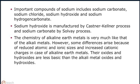The chemistry of alkaline earth metals is very much like that of the alkali metals. However, some differences arise because of reduced atomic and ionic sizes and increased cationic charges in the case of alkaline earth metals. Their oxides and hydroxides are less basic than the alkali metal oxides and hydroxides.